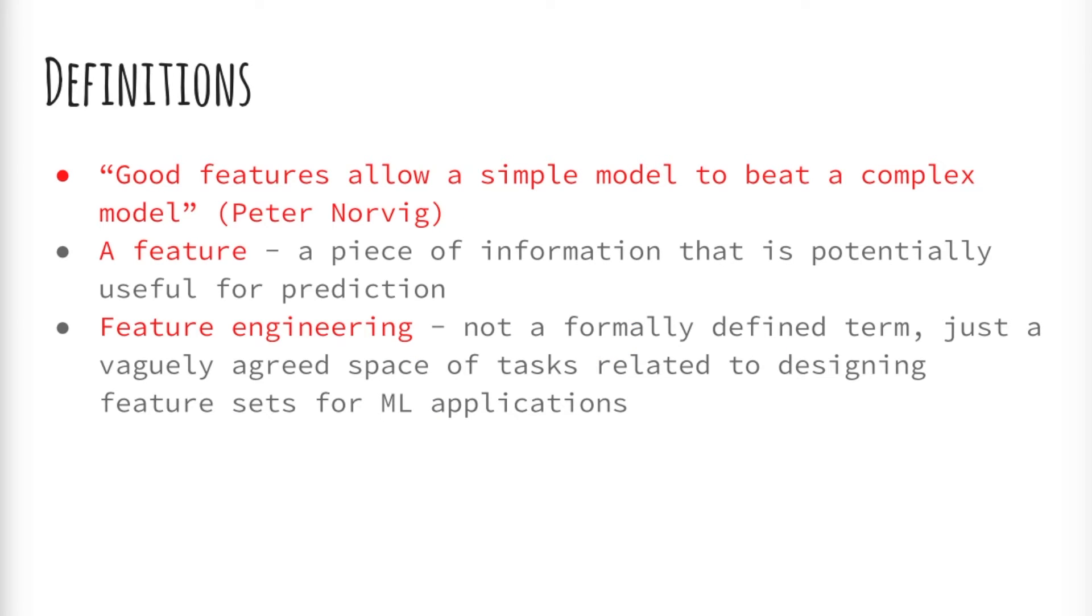To quote Peter Norvig, good features allow a simple model to beat a complex model. The features he was referring to can be in images: the colors, textures, contours; in signals: the frequency, phase, samples, spectrum.